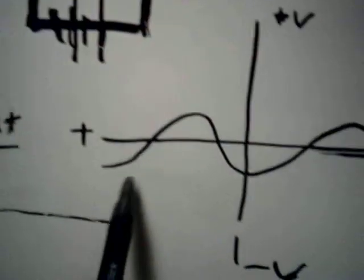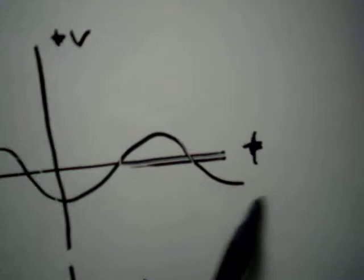And alternating current is like this. Standard sockets run at 60 hertz, which means they go through one cycle 60 times per second.